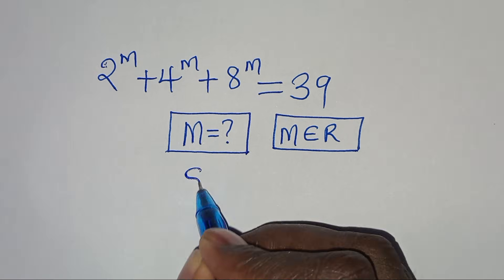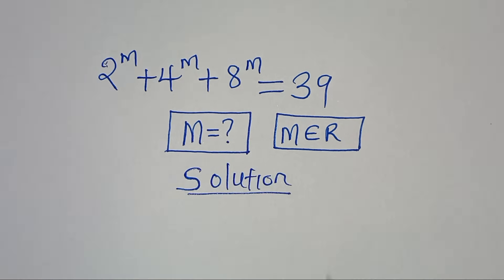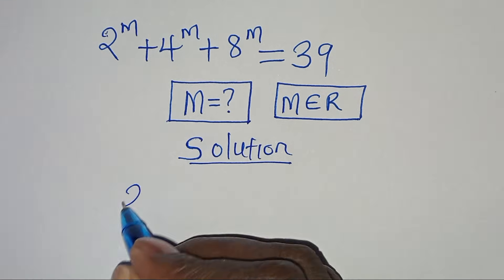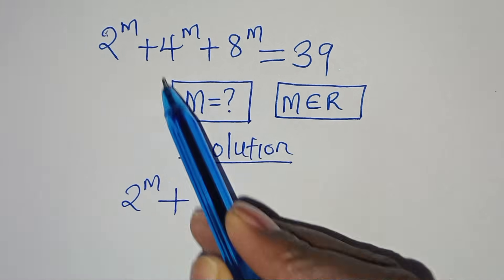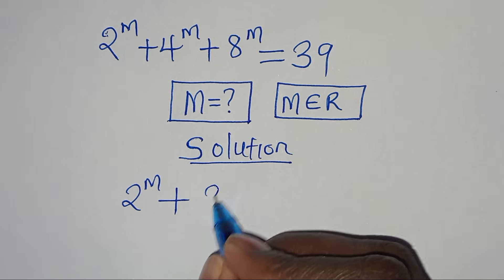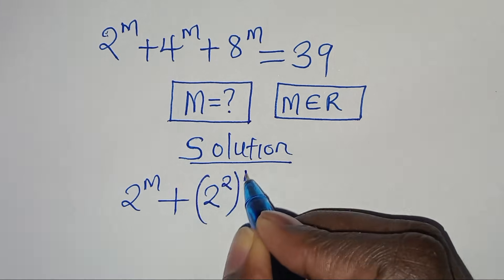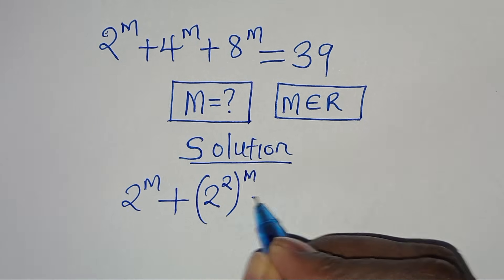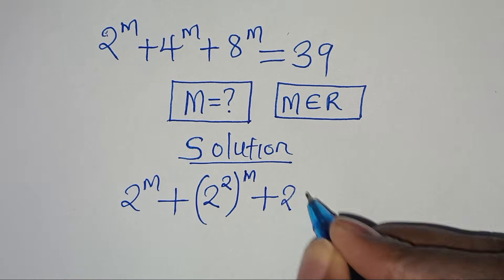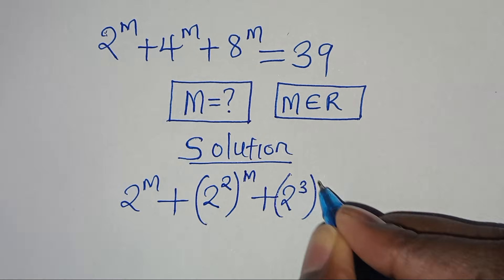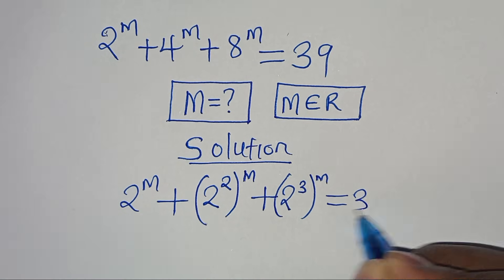Now let's provide a solution. We have 2 to the power of m plus 4 to the power of m, which can be expressed as 2 to the power of 2 raised to the power of m, then plus 8 to the power of m, which can be expressed as 2 to the power of 3 raised to the power of m, this is equal to 39.